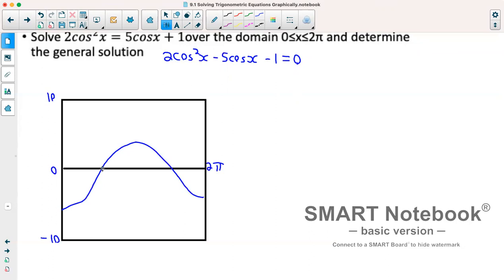We'll use the tools in our graphing calculator to find out this x-intercept, which ends up being 1.76, and then this one here ends up being 4.53.